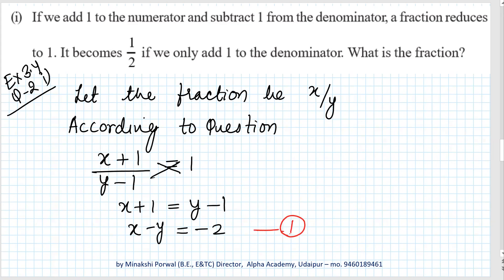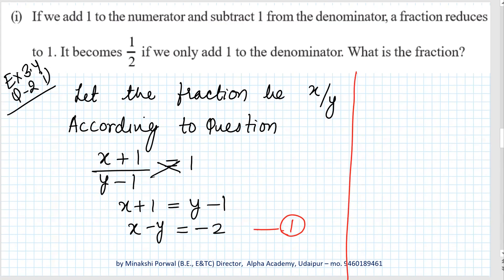Now, the second condition is given: the fraction becomes 1/2 if we add only 1 to the denominator. That means the numerator remains x only, and we're adding 1 to the denominator. So x/(y+1) = 1/2. After cross multiplying, 2x = y+1, or 2x-y = 1. This is equation 2.